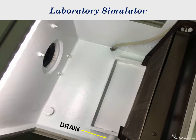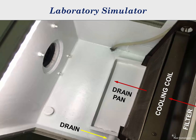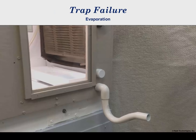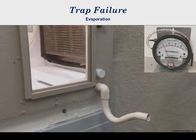Just as in a real system, air is drawn through the filter, the cooling coil, across the drain pan, and into the fan. With the best possible trap geometry, the effect of evaporation is illustrated with an empty trap. The laboratory simulator is being operated with a negative one inch of water pressure. Systems are often operated at this or more negative pressures.